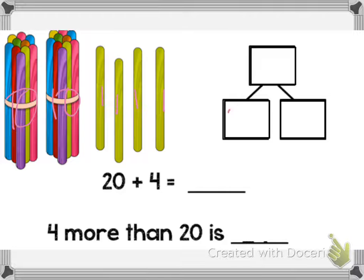There's 10, 20, and 1, 2, 3, 4. So 24. So there's 20 plus 4. So let's count it: 10, 20, 21, 22, 23, 24.